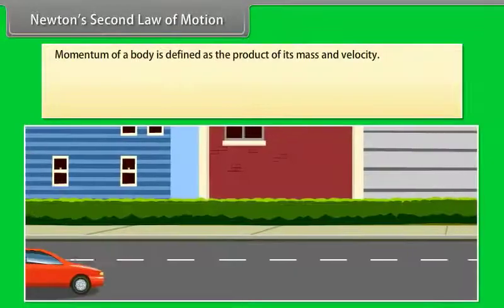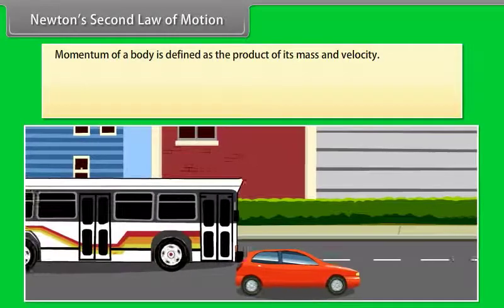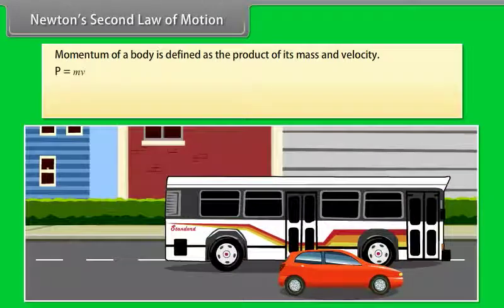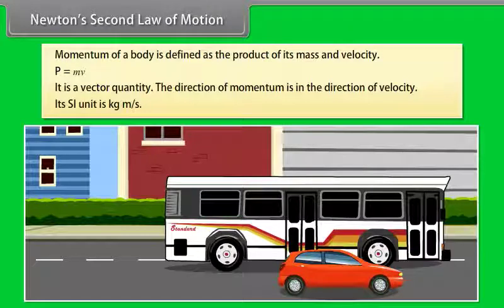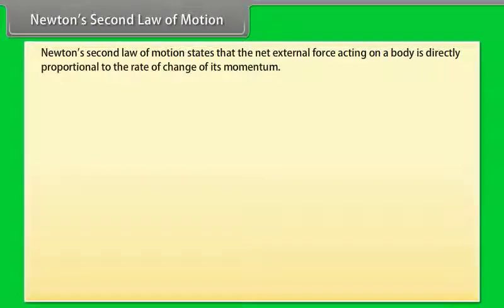Newton's second law of motion: First, we will talk about momentum. Momentum of a body is defined as the product of its mass and velocity: P is equal to M into V. It is a vector quantity. The direction of momentum is in the direction of velocity, and its SI unit is kilogram meter per second. Newton's second law states that the net external force acting on a body is directly proportional to the rate of change of its momentum.